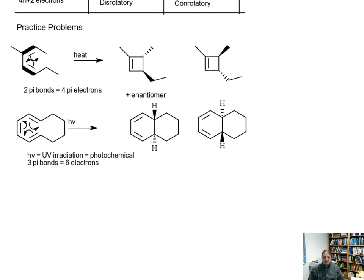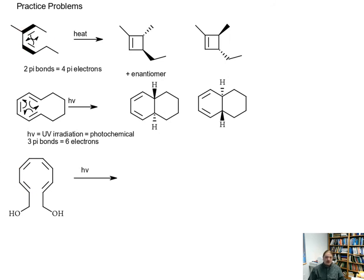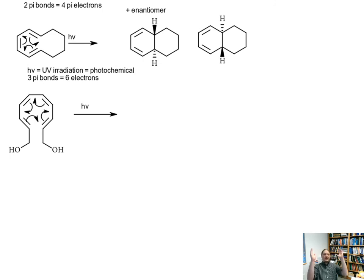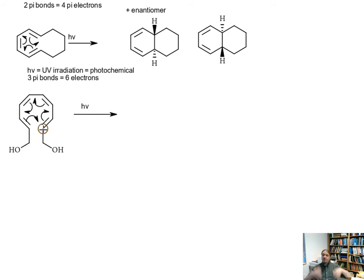Let's do one more. This one's also under photochemical conditions. Here's a larger system. There are four pi bonds here — eight electrons. The mechanism can start at any pi bond and just needs to go around the circle, either clockwise or counterclockwise. This reaction is going to generate an eight-membered ring with eight electrons and four pi bonds. We go to the table: four n electrons, photochemical, disrotatory. Disrotatory means that things are going to look like they're rotating together, so things pointing in the same direction are going to continue to point in the same direction. These two groups on the ends, since they're both pointing in the same direction, are going to both rotate down or both rotate up.